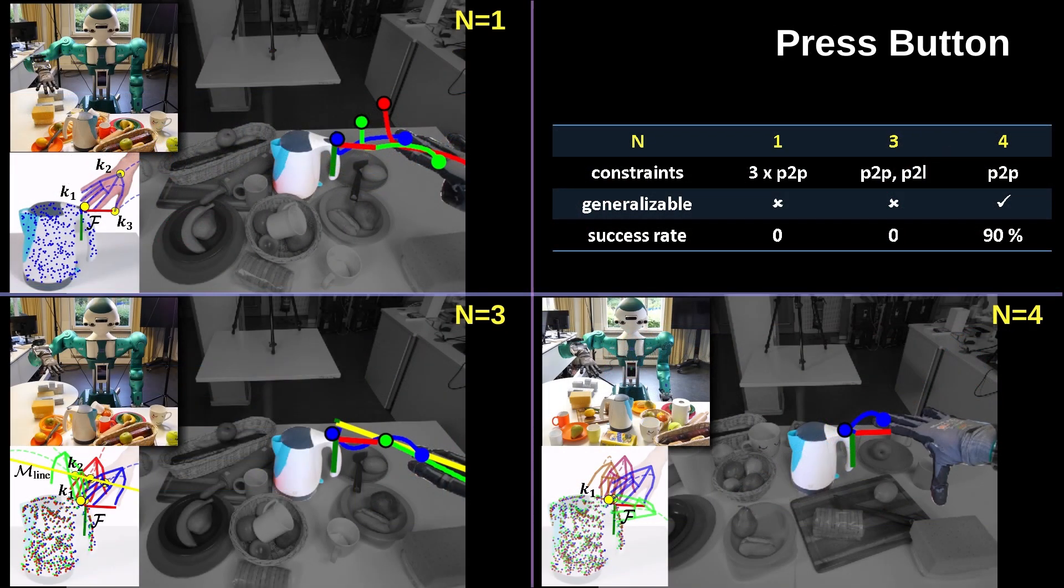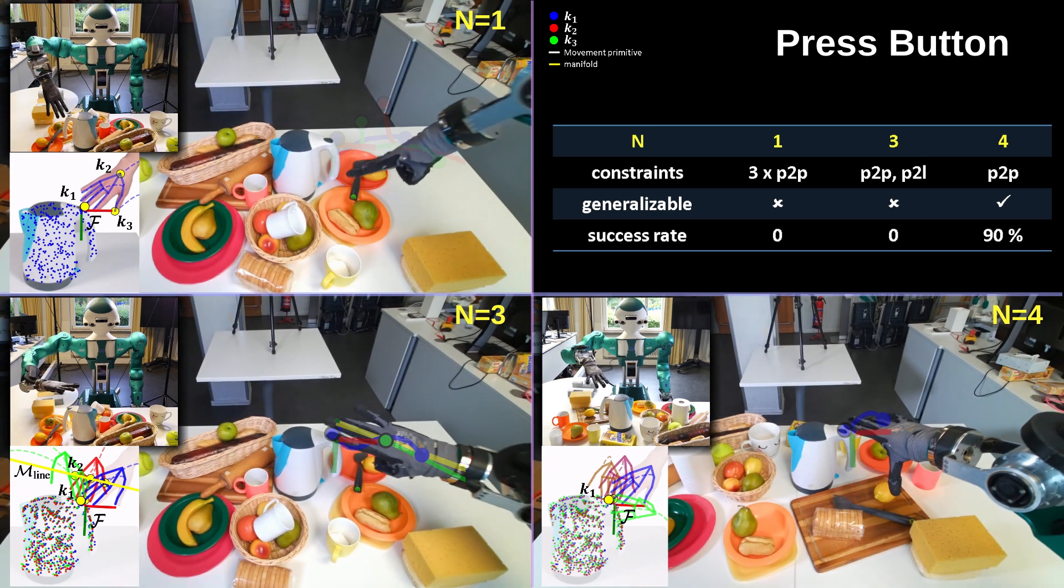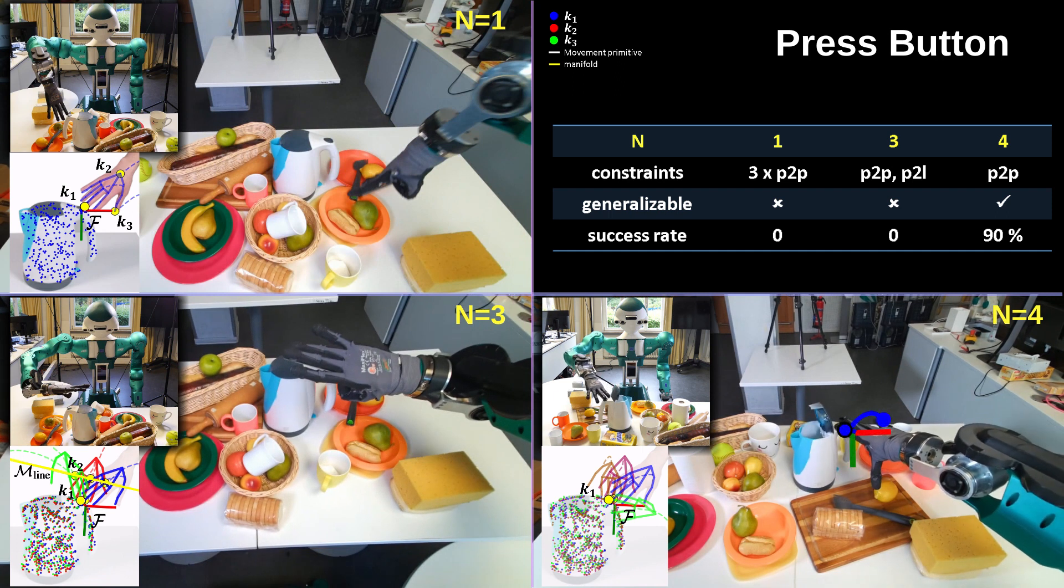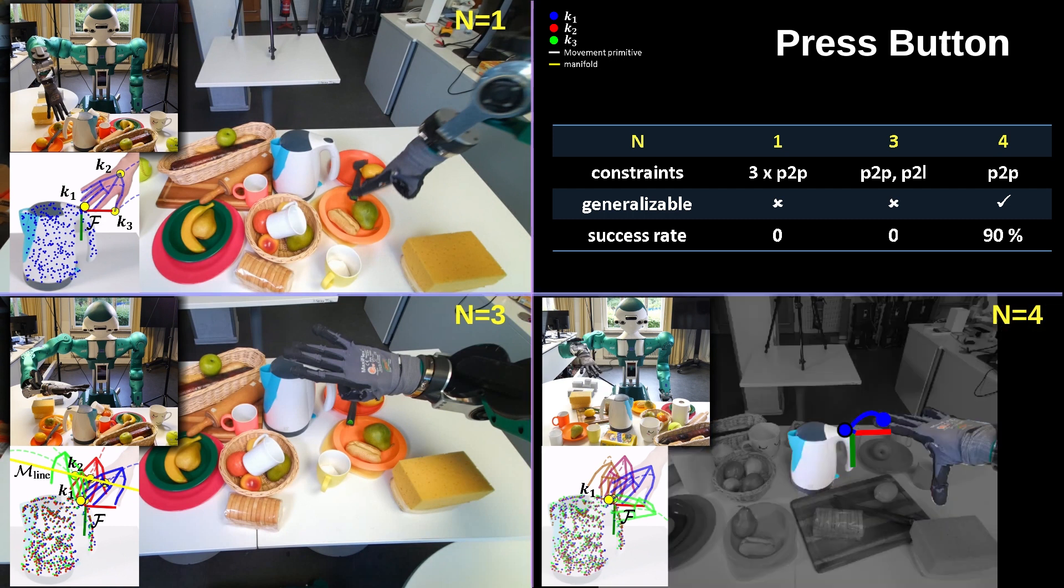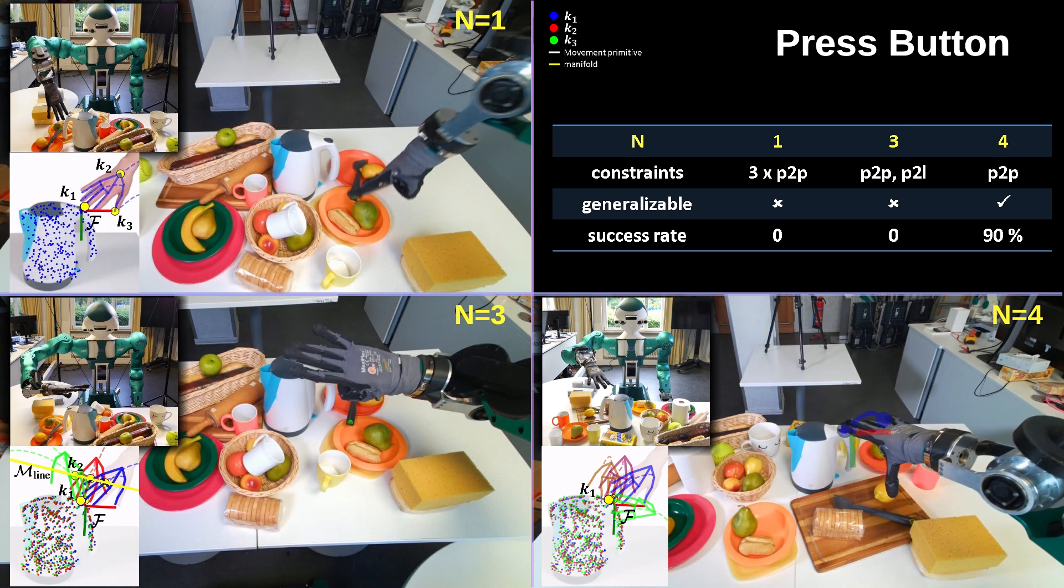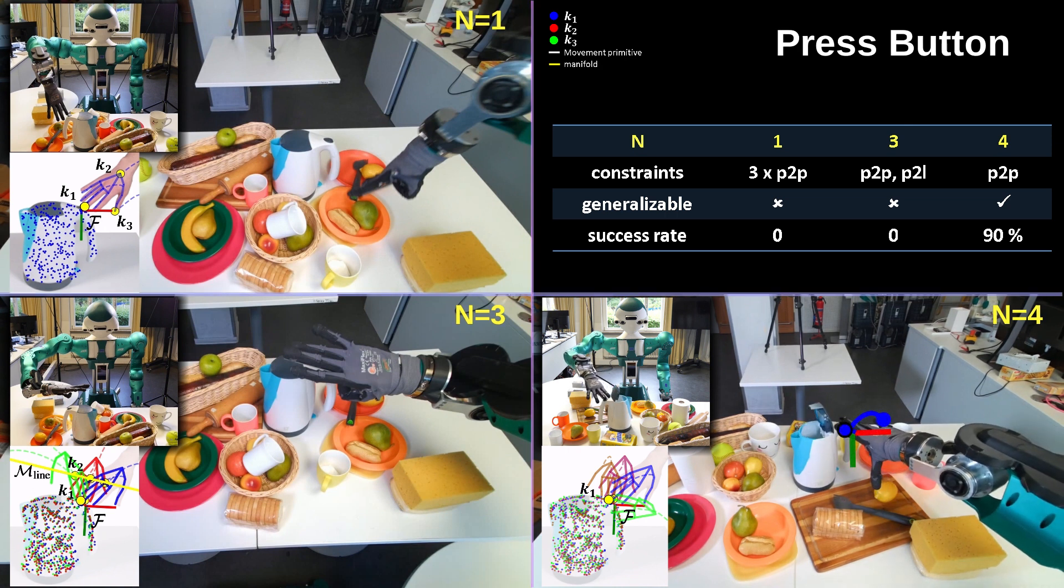Given 1, 3, and 4 demonstrations of the press button task, KIVOS's task representation is shown in the lower left corner of each subtask and in the table. It is adapted to a new scene and overlaid on the execution video. Since the constraints learned from a third-person view in the case of 1 and 3 demonstrations are not reachable by the robot without moving to the other side of the table, it failed almost every time. With 4 demonstrations, KIVOS learns a point-to-point constraint. This corresponds to the contact point on the button, which is the only required constraint to reproduce this task. Therefore, it is generalizable and reaches a 90% success rate.